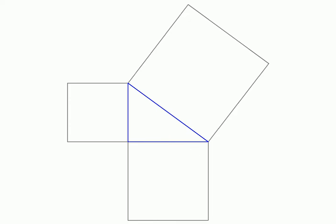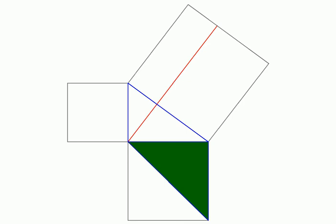Then we'll do a construction from the vertex where the 90 degree angle is formed. I have dropped a perpendicular to the hypotenuse and then extended it till it meets the other side of the square that we have constructed. Then I am going to construct a triangle in one of the smaller squares so that its area is half of the square that encloses it.